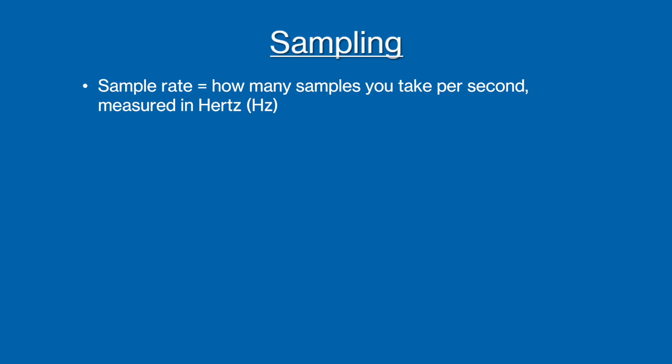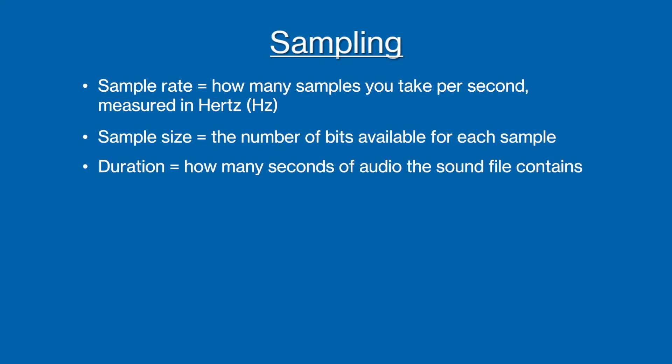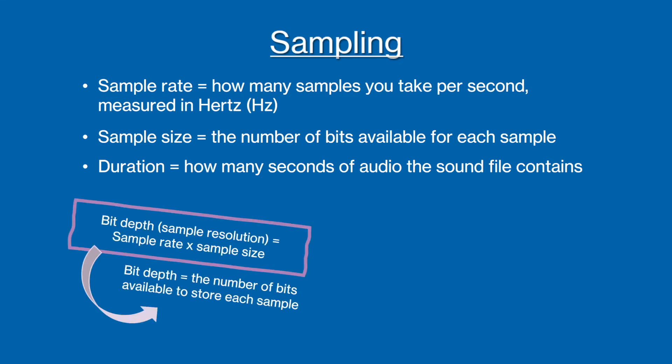Once the sound wave has been sampled so that the computer can interpret it, it needs to be stored. The bit depth is the number of bits available to store each sample. This can be calculated by multiplying the sample rate by the sample size, which is the number of bits available for each sample of the audio file.